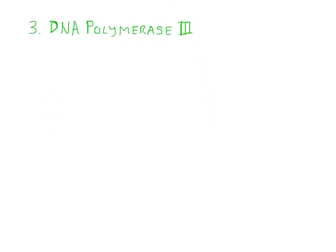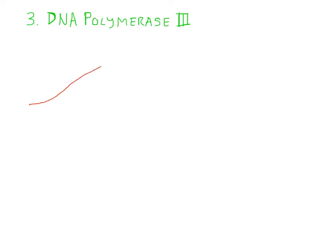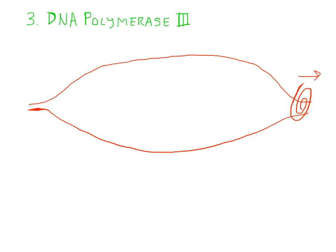The next enzyme to come into play is called DNA polymerase 3. Let's recreate a portion of the DNA helix that's been unzipped. We have our helicase still traveling in this direction. We have our primer that's made of about 10 nitrogen bases, happening on the leading strand and on the lagging strand.